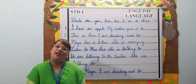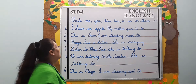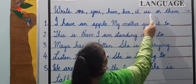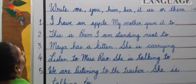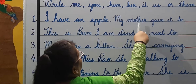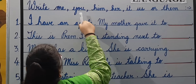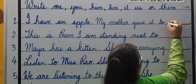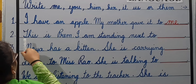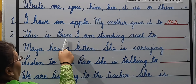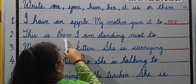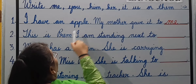Now moving on to another exercise. Write me, you, him, her, it, us, or them. Number one: I have an apple. My mother gave it to — me. Number two: This is Primm. I am standing next to — Primm is a boy, so the answer is him.